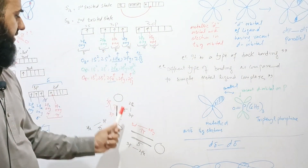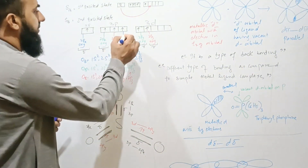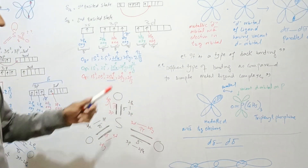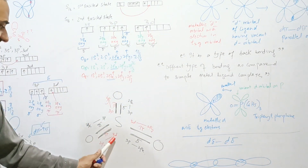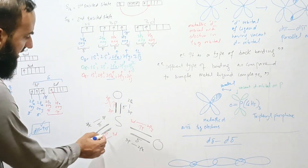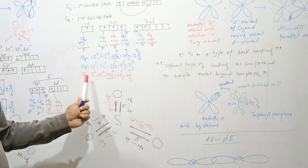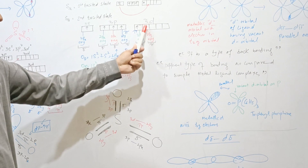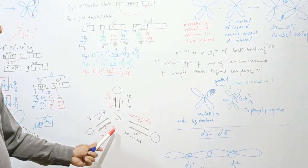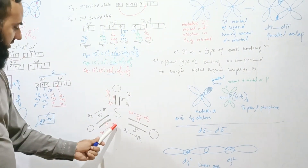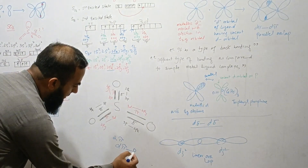The 2py orbitals of oxygen then participate in parallel overlaps forming pi bonds. The 2py of one oxygen overlaps parallelly with 3d of sulfur, forming a dπpπ pi bond. So in SO3 there are two pi bonds formed through the dπpπ system.